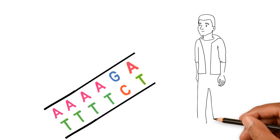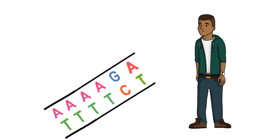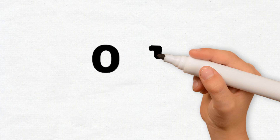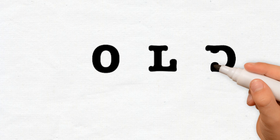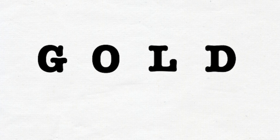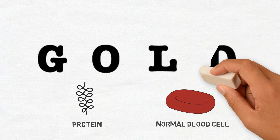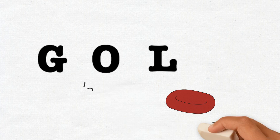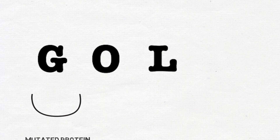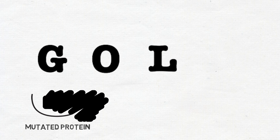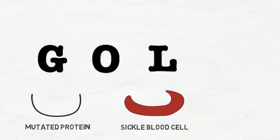These variants make our DNA unique to us, but not all variants are indicative of disease. For example, take the word 'old.' At some point, another base, G, was added to the sequence, making it read 'gold.' Since this still makes sense, the variation is harmless and the person would be unaffected. But if the D was removed, the new sequence reads 'gol,' which has no meaning, and would therefore negatively affect the protein and give disease.